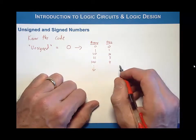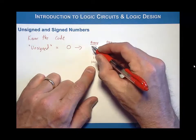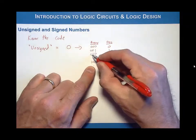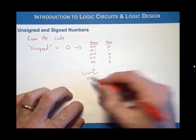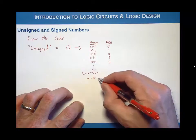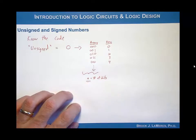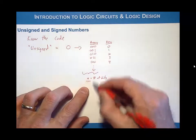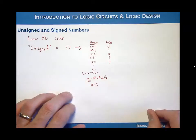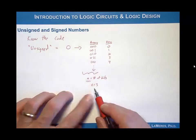But in real circuitry, we always talk about how many bits we need. If we counted up to four, in reality we had three bits required for that. So we need to define a variable, which we'll call lowercase n, and that is going to be equal to the number of bits in a particular code. So n becomes very important.